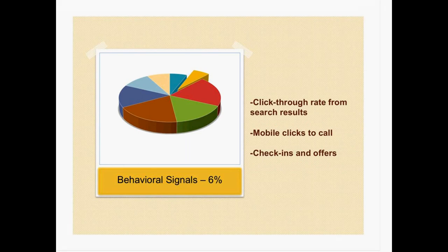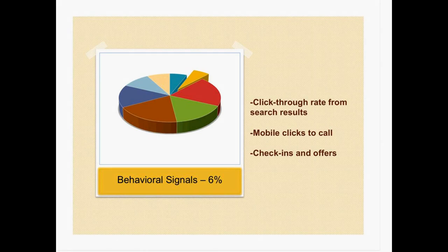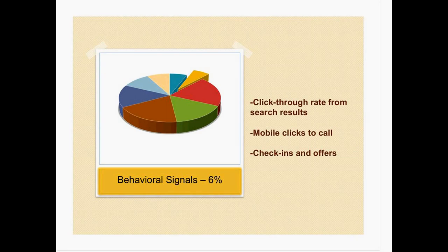Behavioral signals include the click-through rate from search results to a website, and mobile clicks to call. Mobile is a rising field — many people using mobile search are trying to find phone numbers, locations, and places to eat near them. When someone types a query on their phone, your phone number will automatically come up on the search results page, and people will click right there to call you. Check-ins and on-site activity also influence your local SEO rankings — the more activity going through your site, the more it raises your ranking.